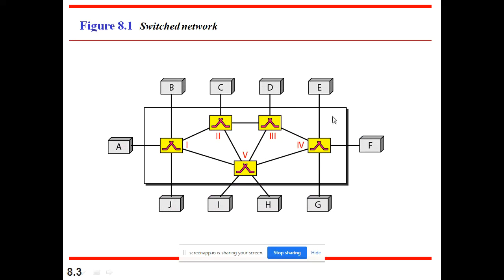And in between, in yellow color, we can observe 1, 2, 3, 4, 5. These are all the switches. In the diagram, we can see the end systems and the switches. And these switches are acting like intermediate devices to connect different end systems.